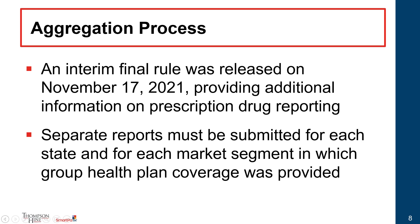The Consolidated Appropriations Act obligates the various departments to provide a report to Congress on a biannual basis regarding the information reported to them. It seems that as a result, the interim final rule indicates aggregation is preferred by the departments. To the extent you can aggregate, that would be a better option — it will probably be less work in the long run and is clearly what the departments are looking for.